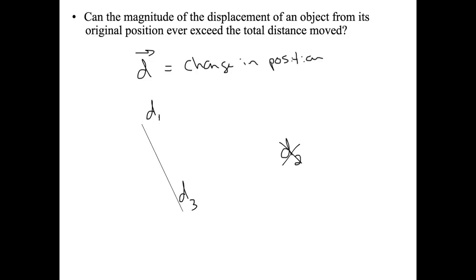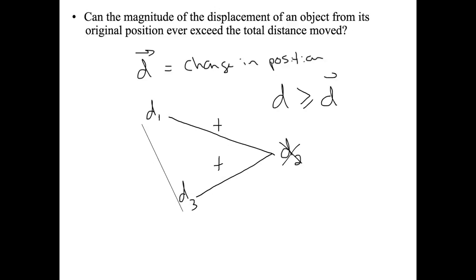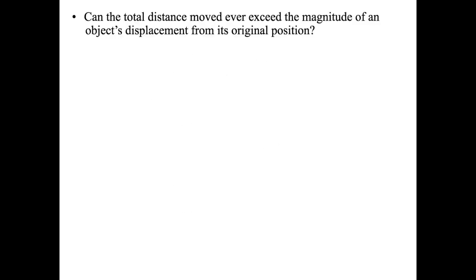The distance traveled is always going to be a calculated number from d1 to d2 plus d2 to d3. So distance will always be greater than or equal to displacement. Therefore, the answer to this question is no — the displacement can never be larger than the total distance moved.